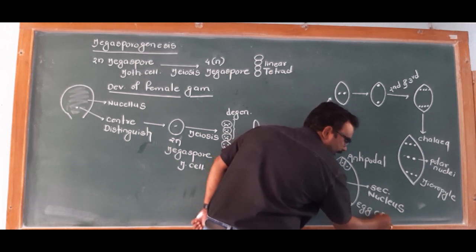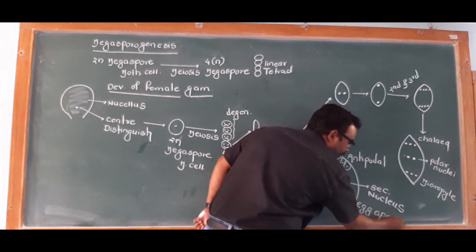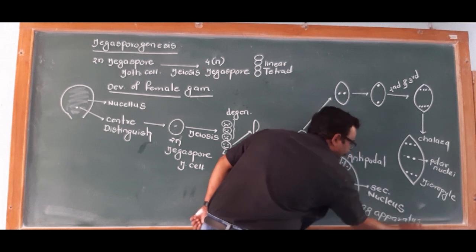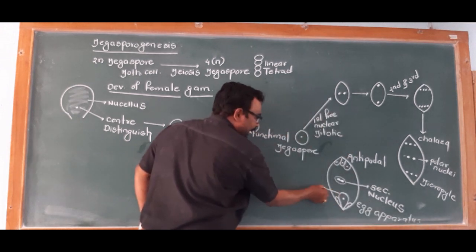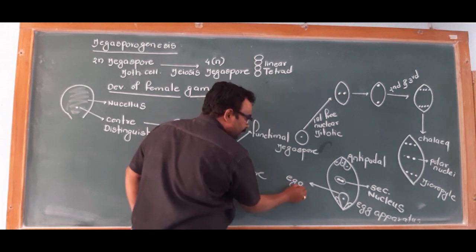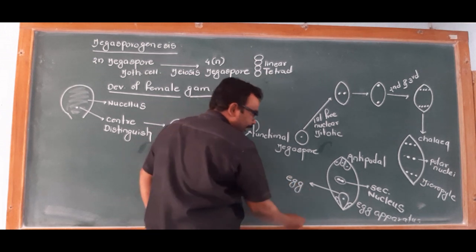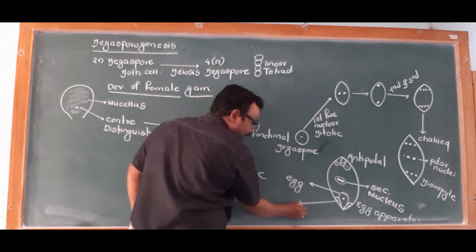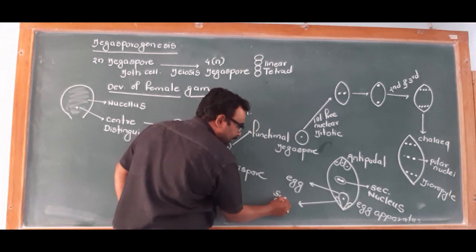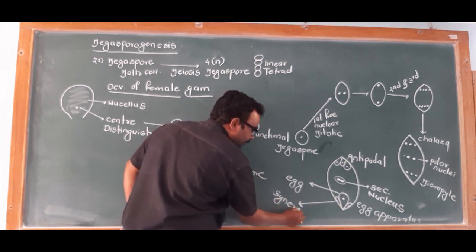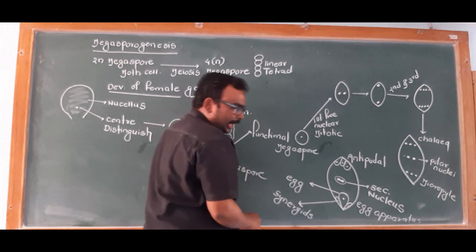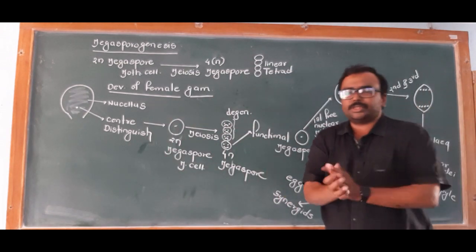What are the three cells at the micropylar end called? They form the egg apparatus. Within the egg apparatus, the central cell is the egg cell. The two surrounding cells are the synergids.